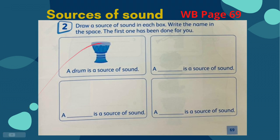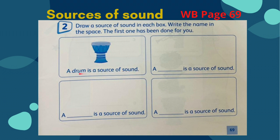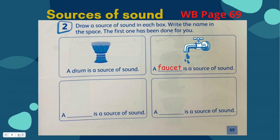For number 2, draw a source of sound in each box, then write the name in the space. The first one has been done for you. A drum is a source of sound — you heard that, I played it before. A drum bangs. These are my examples. A faucet or running tap water is a source of sound.